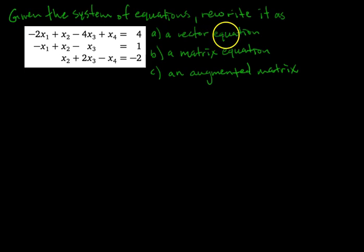So for part A, we want to re-write it as a vector equation. To do that, we're going to split it up into the common terms with the unknown variables, and we'll make different vectors that each have the same unknown variable, and we'll set it equal to a vector, which is the right-hand side of this equation, the constant.